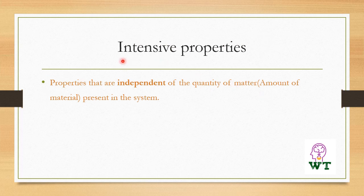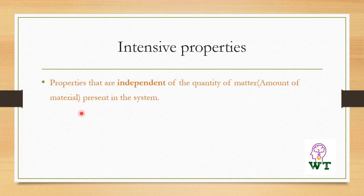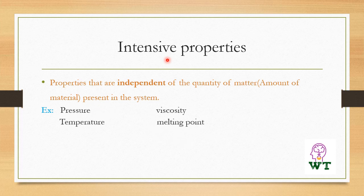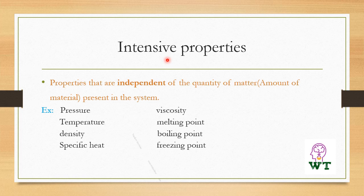Intensive properties are those that are independent of the quantity of matter or amount of material present in the system. That means, a property which does not depend on the amount of substance present in the system is considered an intensive property. Examples include pressure, viscosity, temperature, melting point, density, boiling point, specific heat, freezing point, surface tension, and concentration.